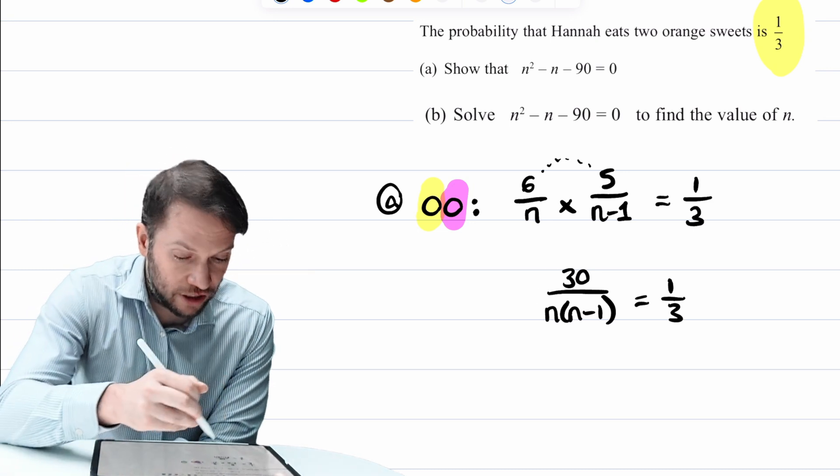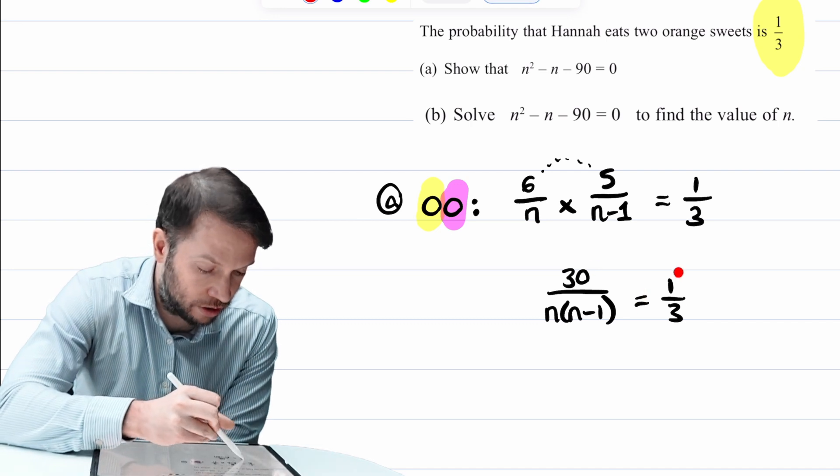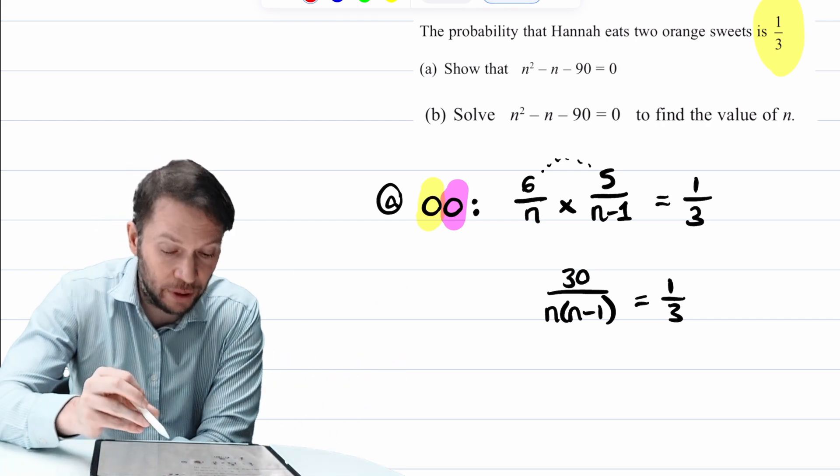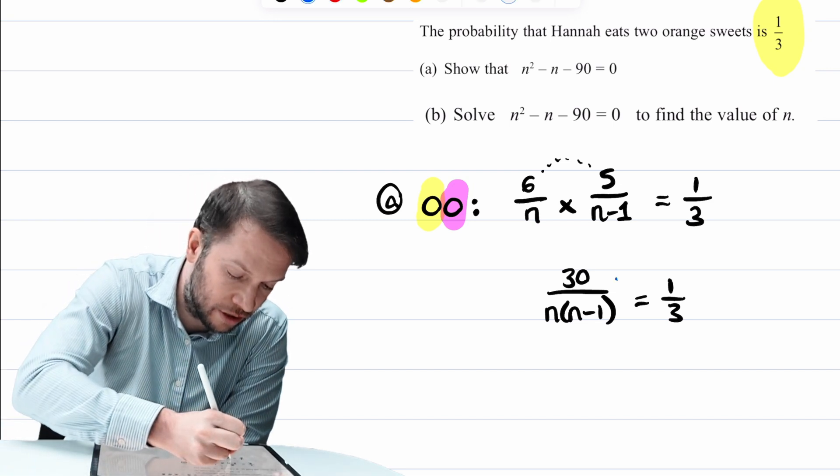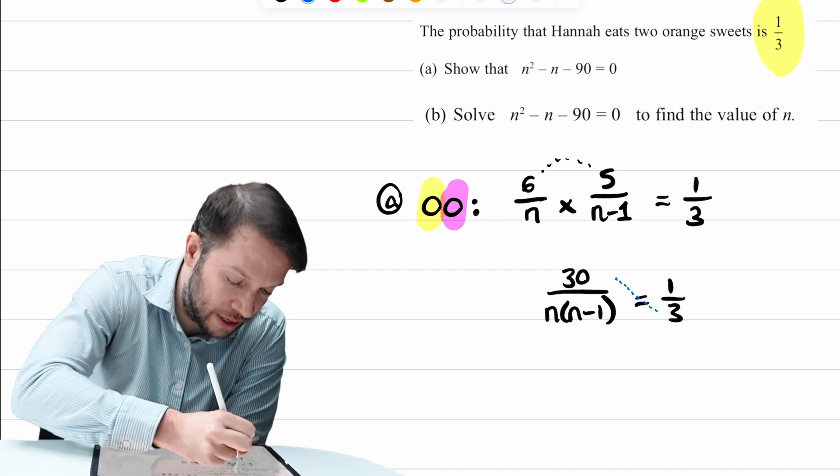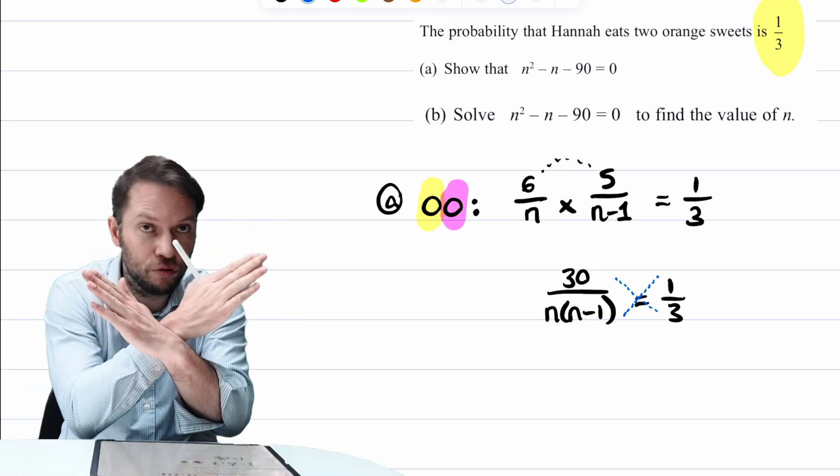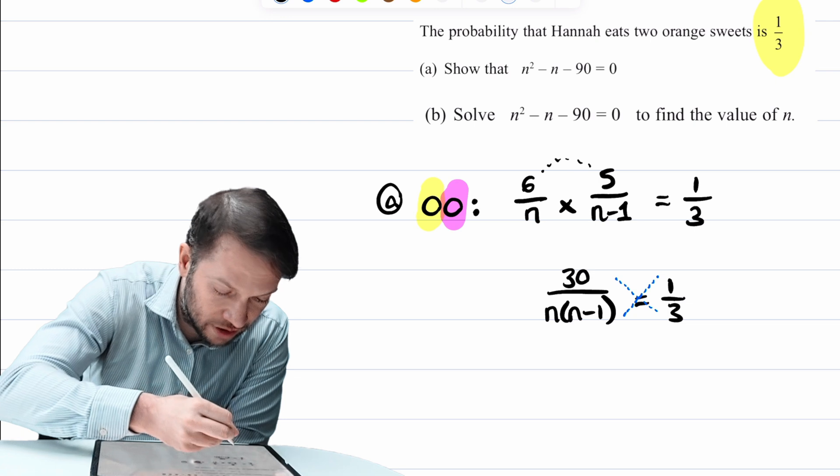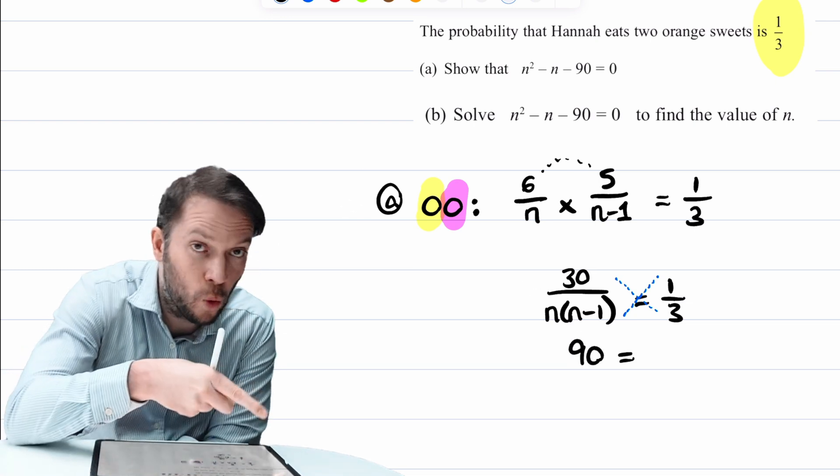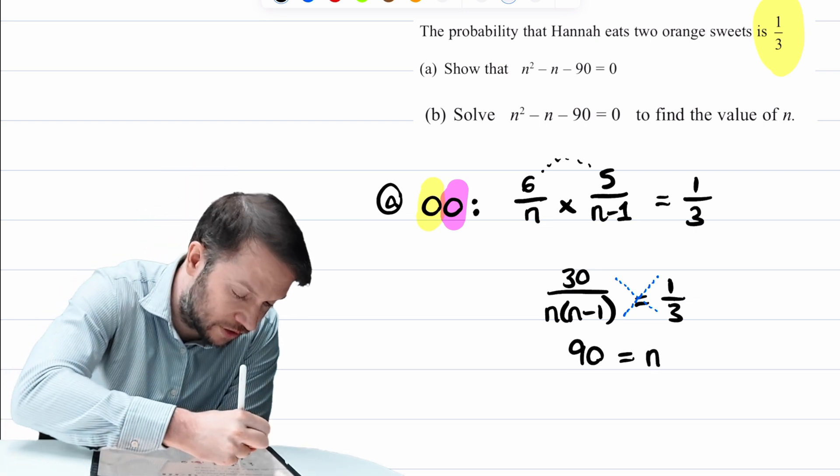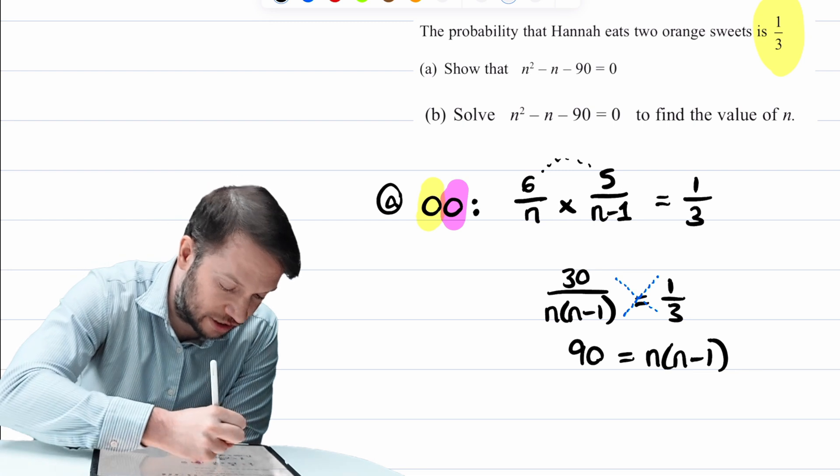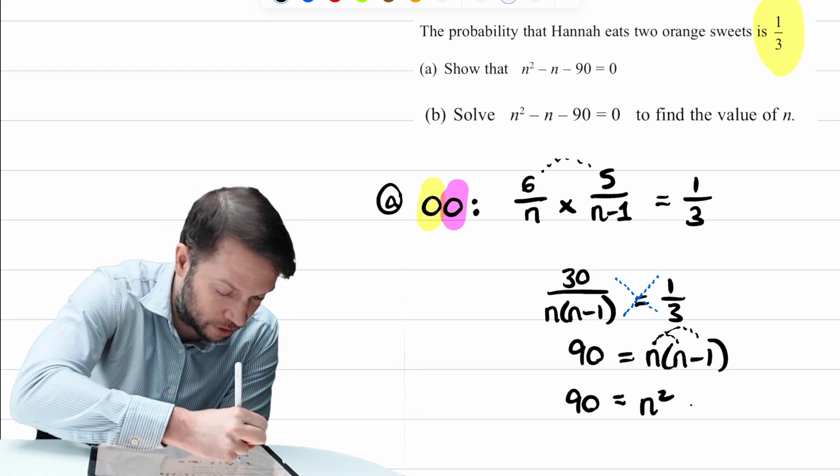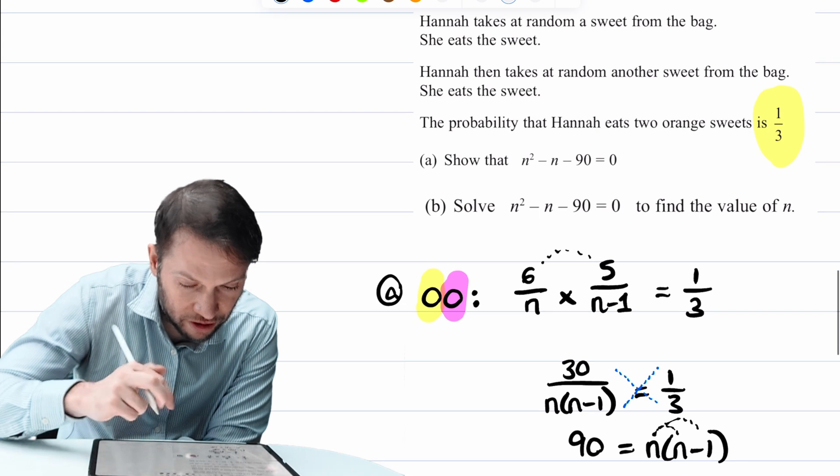And at this stage, we've got a fraction equal to a fraction. When you have a fraction equal a fraction, and no other terms being added or subtracted or anything like that, then basically we can use something called cross multiplication. And what that means is we can do this times this equals this term times this term. That's why it's called cross multiplication. So we're going to do the 30 times three, which is 90, is equal to the one times the n times n - 1. And then I can just expand that bracket. So we're going to have n times n, which is n², and we've got n times -1, which is -n.